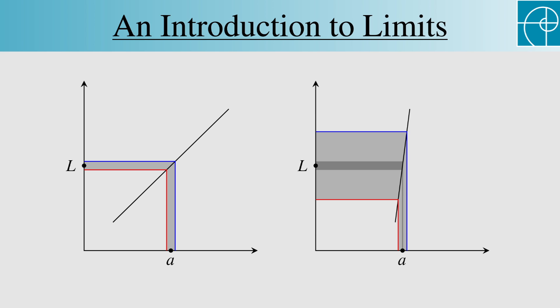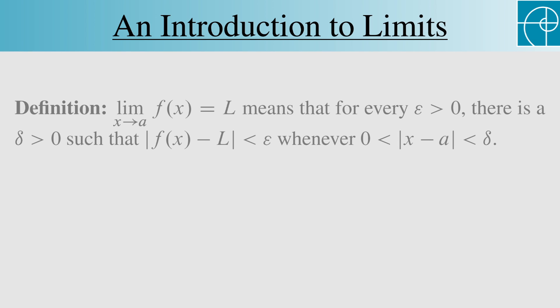Putting this in formal language, we get this definition, saying that the limit as x approaches a of f equals L means that for every epsilon greater than zero, there's a delta greater than zero, such that the absolute value of f is less than epsilon, whenever the absolute value of x-a is strictly between zero and delta. Note that we require that x-a not be zero, since we don't want x to be equal to a. Remember that we don't care what f of a is when considering the limit.